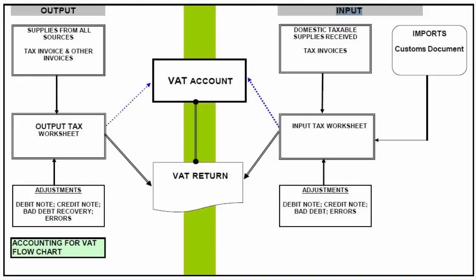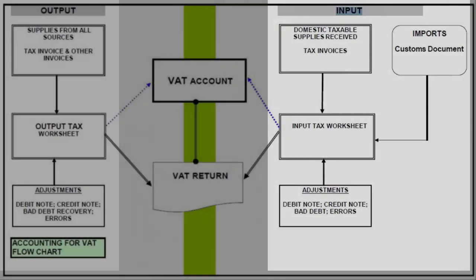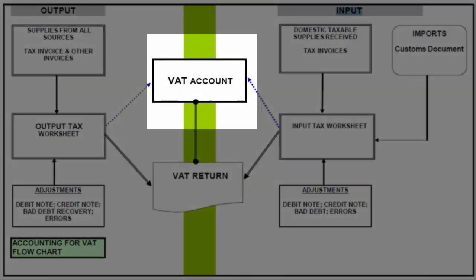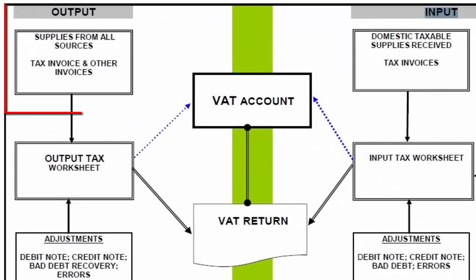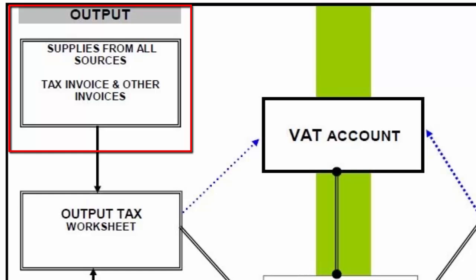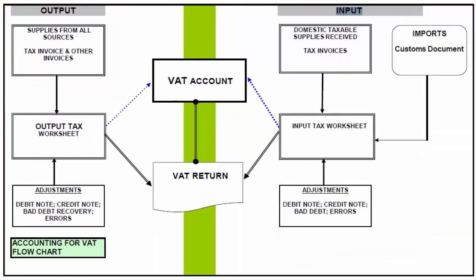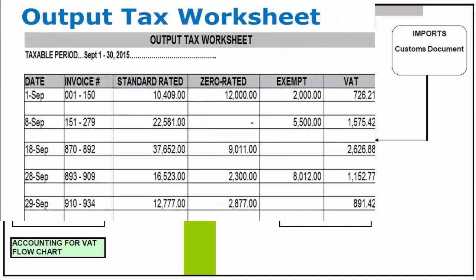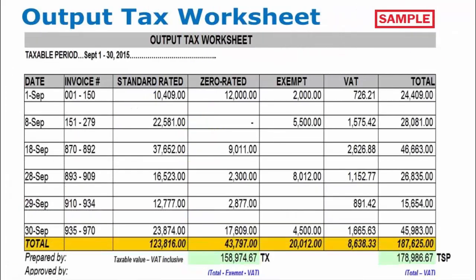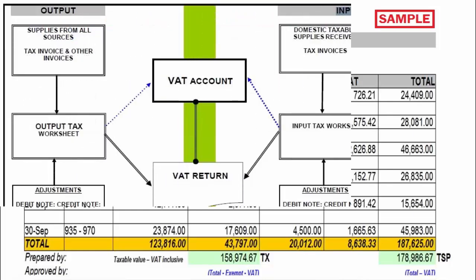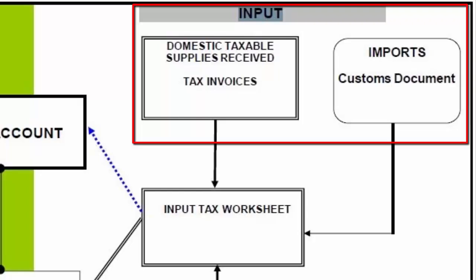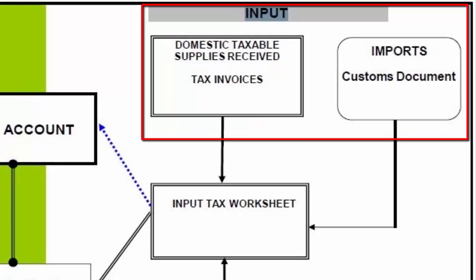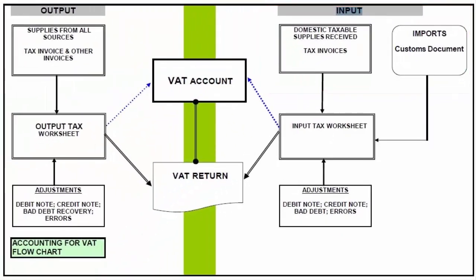This flowchart shows information relating to your inputs and outputs which will feed into your VAT account and ultimately your VAT return. Your output is regarded as what you are selling or providing, for which an amount is received, which should be captured in your output tax worksheet. Your input is regarded as expenses from the day-to-day operations of your business, which should be captured in your input tax worksheet.